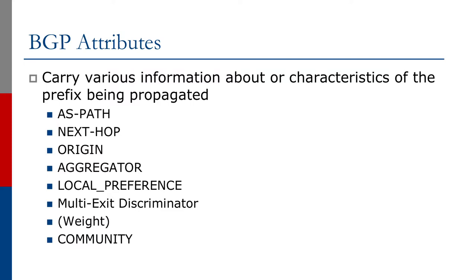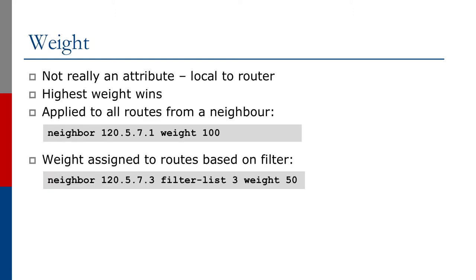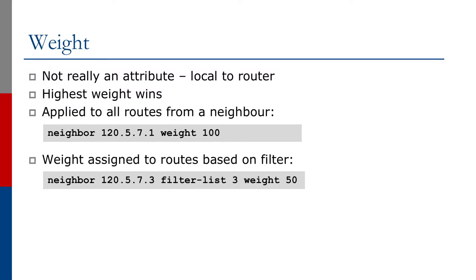We're now going to look at weight. Weight is included in the list even though it's not really a BGP attribute. A BGP attribute is passed from BGP speaker to BGP speaker, from AS to AS. Weight isn't passed from any BGP speaker — it's just local to the router and is stored within the BGP RIB when prefixes arrive. Weight can be seen as a local preference that only applies to the router, and it overrides the local preference, as we'll see later.